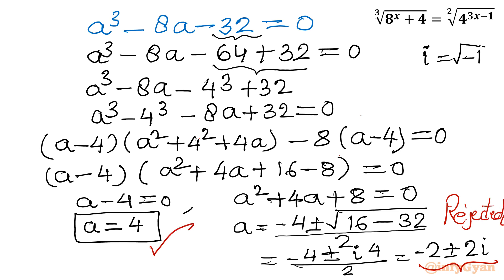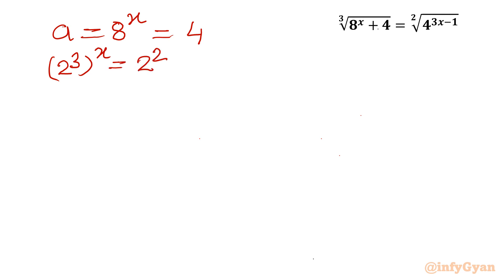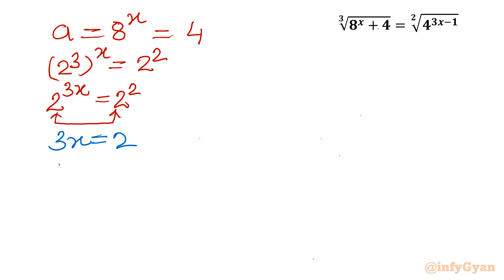So the solution we accept is a equals 4. Since a was our substitution for 8^x, we write 8^x equals 4. Writing 8 as 2^3 gives (2^3)^x equals 2^2, so 2^(3x) equals 2^2. Since the bases are the same, we compare exponents: 3x equals 2, and dividing both sides by 3 gives x equals 2 over 3.